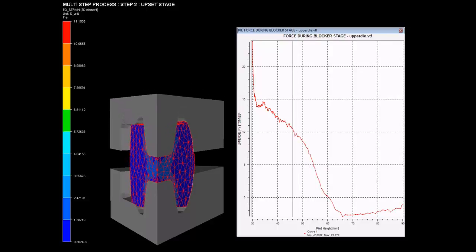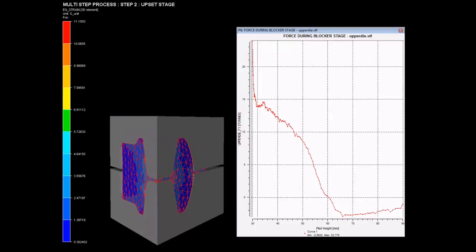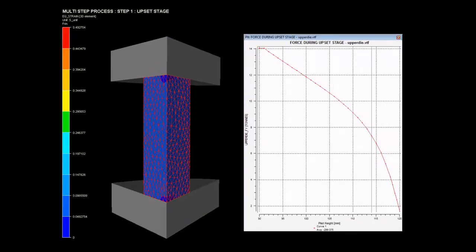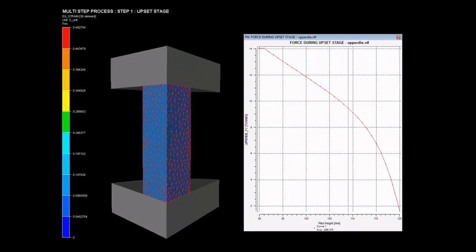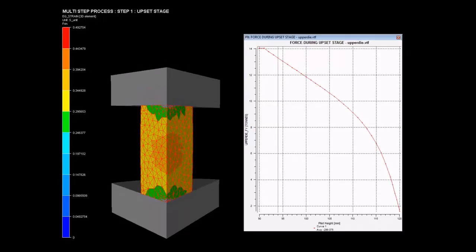A quarter section of dies in operation is shown. On the right side, the graph between force on upper die versus pilot height in two successive stages is shown, describing force variations with change in the pilot height.